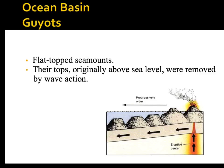A guyot is a flat-topped sea mount. Guyots are created because the tops have been removed by water erosion — waves and so forth.